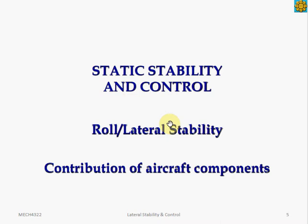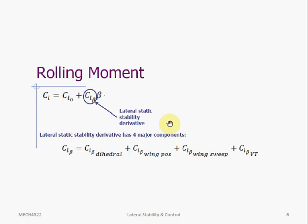Let's look at the aircraft's lateral stability by its individual components. If we derive the rolling moment equation and rewrite it as the dimensionless rolling moment coefficient equation, it is described as a function of the sideslip angle beta. To determine lateral static stability, we look at CL_beta, which can be computed by adding up contributions from the aircraft's dihedral, the wing's position mounted on the fuselage, the wing's sweep, and the vertical tail.